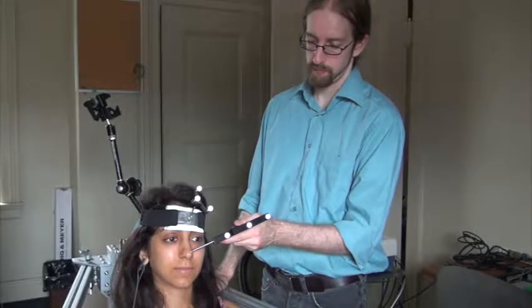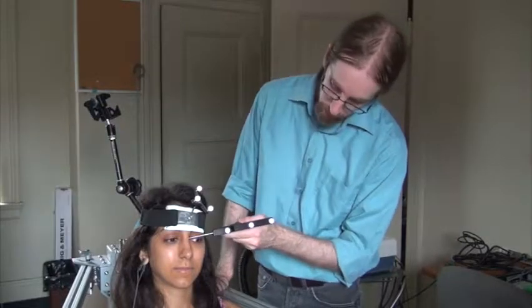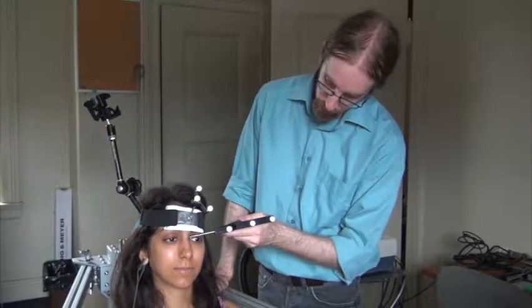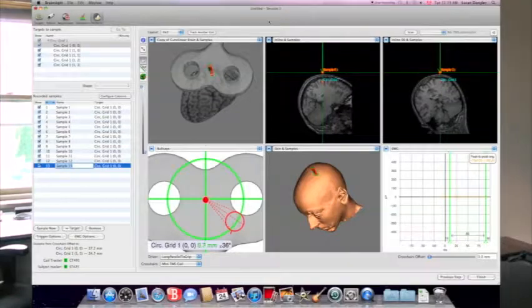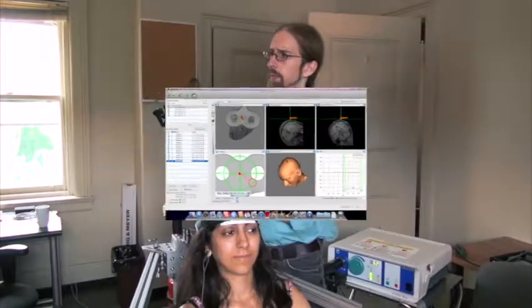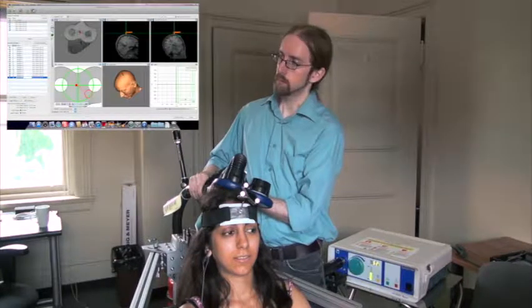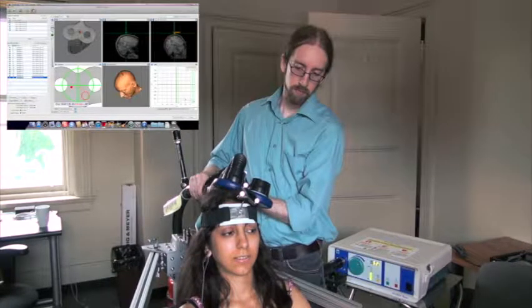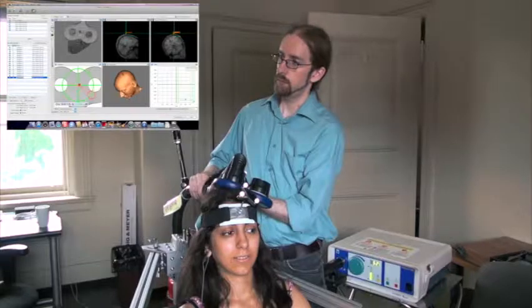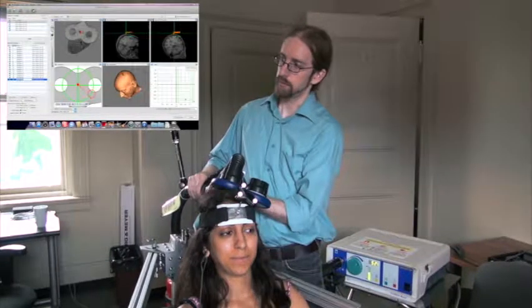Specific spots on the participant's head, such as the nose tip and bridge, are registered to the corresponding spots in the 3D model used by the mapping software. Following this registration, infrared sensors located on the coil and on the headband worn by the participant allow for positioning of the coil relative to the participant's brain.